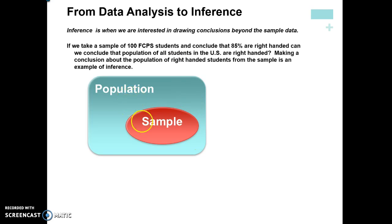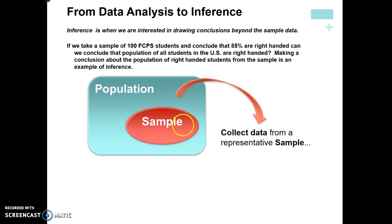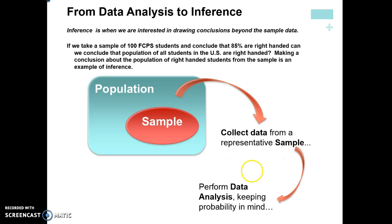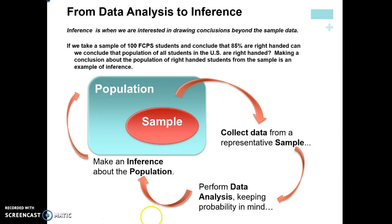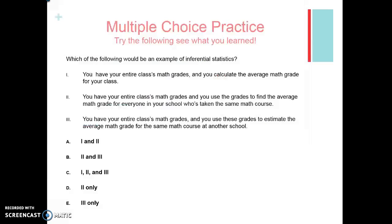A sample is always going to be a subset of the entire population, and it will be important later on to understand how to take a good sample. To do inference: take a sample from the population, perform data analysis by creating a graph and looking at the mean, median, and average, and then make an inference about the entire population — for example, are 85% of all students right-handed? Go ahead and try the next practice question; hit pause and then take a look at the answer on the next page.